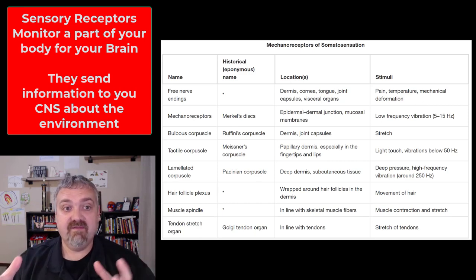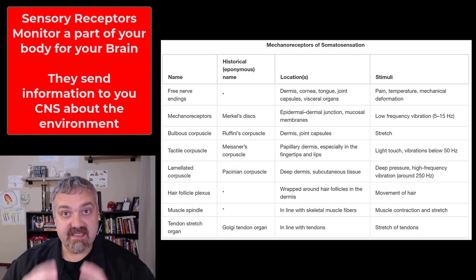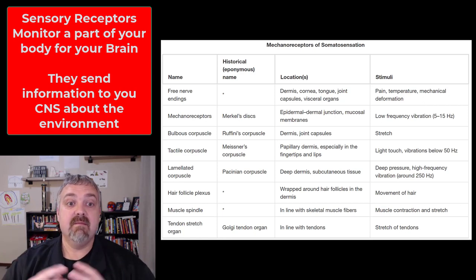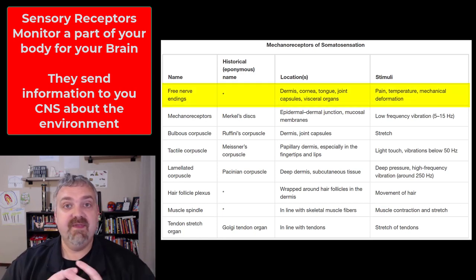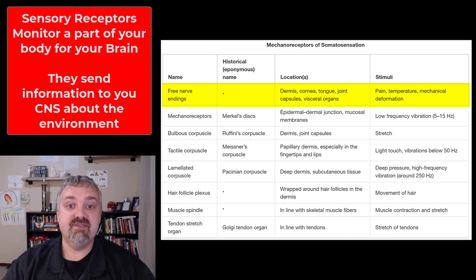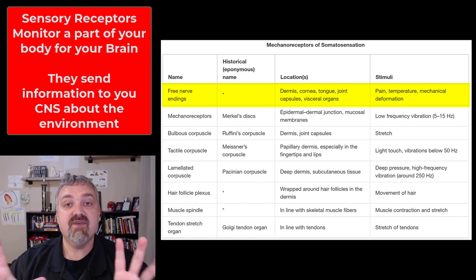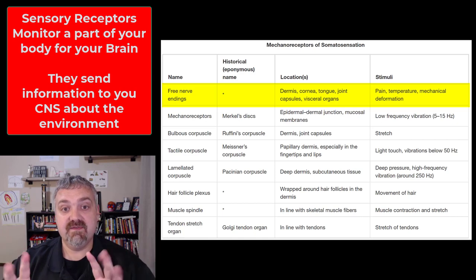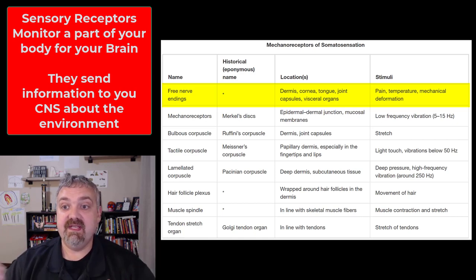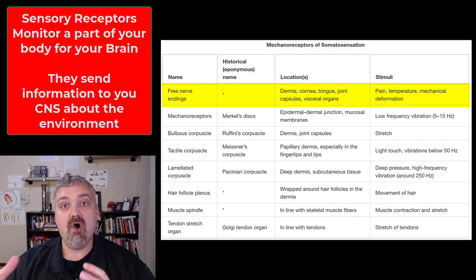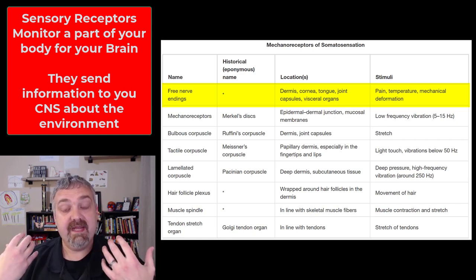Detection depends on the different receptors. Some receptors respond to very specific things, some much more broad. The simplest, most basic receptor we have is the free nerve ending — these are the ends of dendrites of sensory nerves. They can be stimulated by many different stimuli: pain, temperature, mechanical deformation — all of those will send signals to the brain.